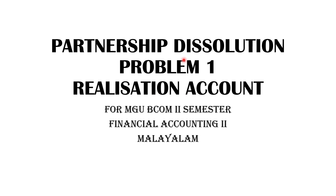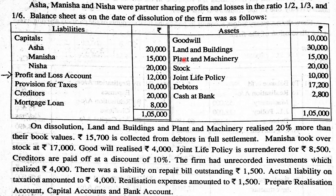This video covers partnership dissolution. The dissolution process and general entries were explained in the previous video, so here we solve a question. Asha, Manisha, and Nisha are partners sharing profits and losses in the ratio 1/2, 1/3, and 1/6. The balance sheet as on the date of dissolution of the firm is given, with assets and liabilities listed for each partner.